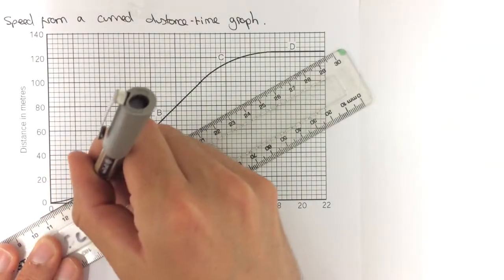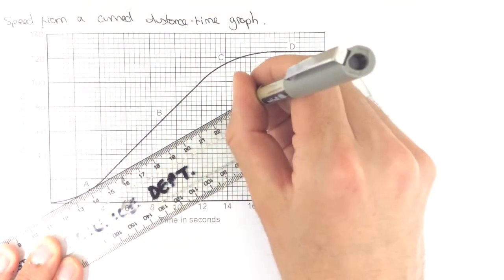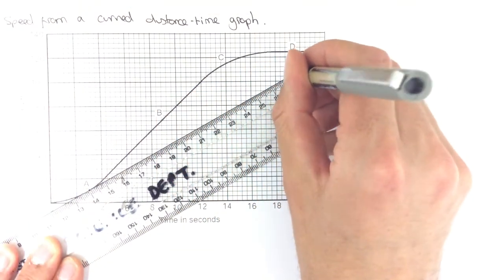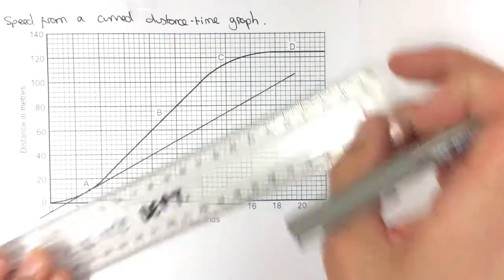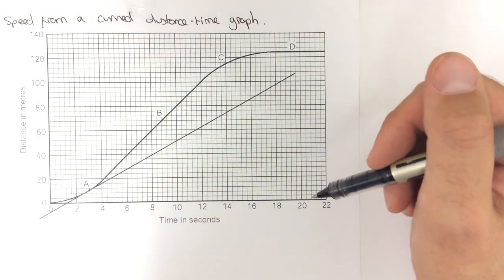And I can draw in a line. And you'll notice that drawing in that tangent, I've drawn the line really long. The reason for that is that, having drawn the tangent to my line, I now need to find the gradient of that tangent.